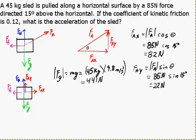A common error in these types of problems is to assume that the normal force will be equal to the magnitude of the force of gravity. That's incorrect because the applied force partially supports the weight of the sled. In this case, the applied force supports 22 Newtons of the weight of the sled.